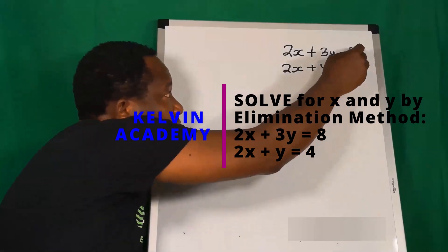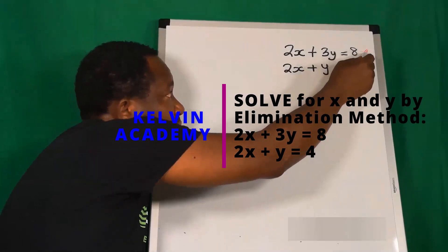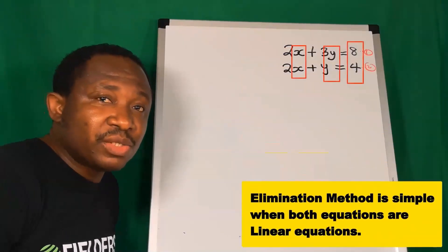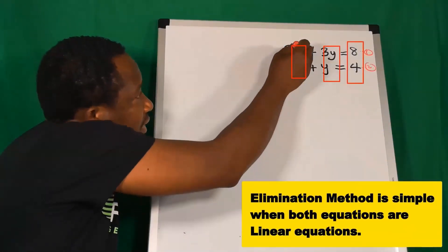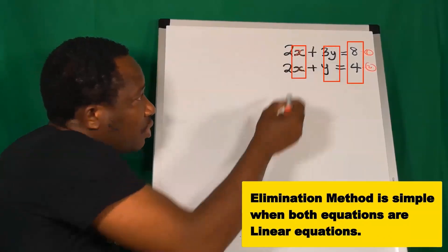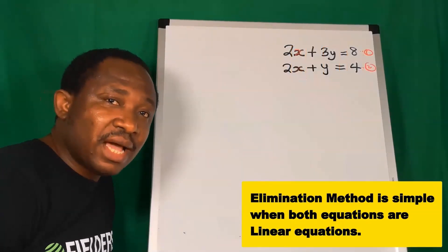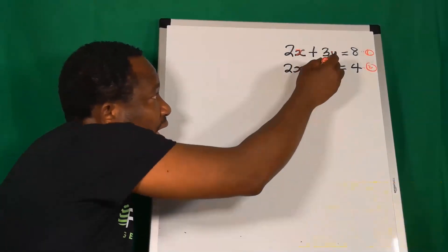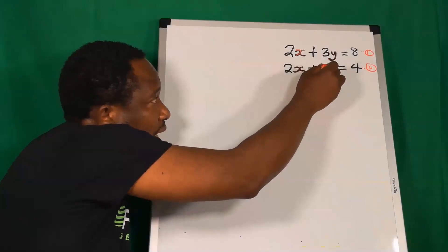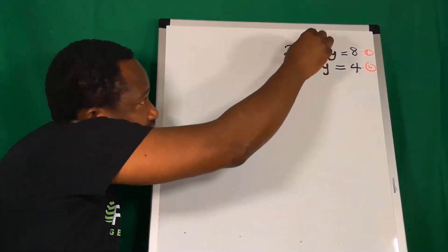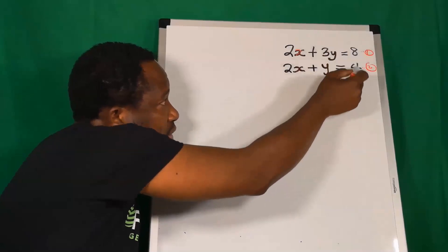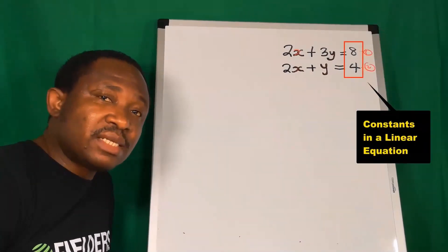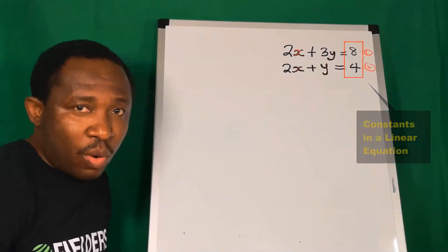Here we are now going to have equation 1 and this is equation 2. The first step is to ensure that the x for equation 1 and the x for equation 2 are vertically aligned. Also, ensure that the y at equation 1 and the y in equation 2 are also vertically aligned. The constants on the other side of the equal sign are the numbers without x or y.